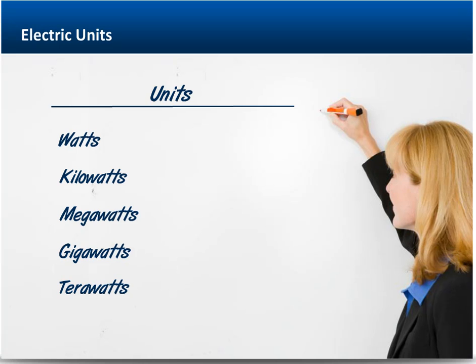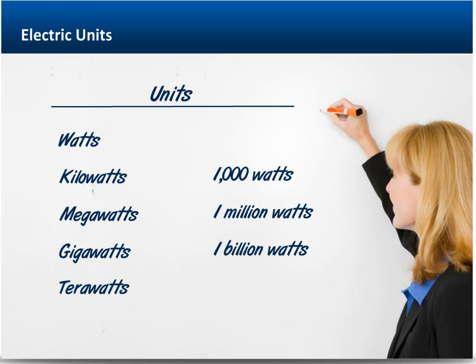A kilowatt is 1,000 watts, a megawatt is 1 million watts, a gigawatt is 1 billion watts, and a terawatt is 1 trillion watts.